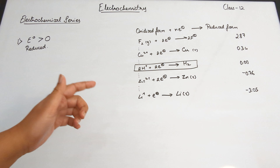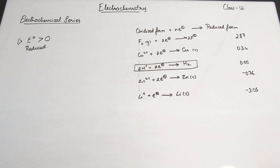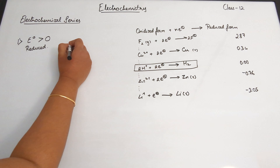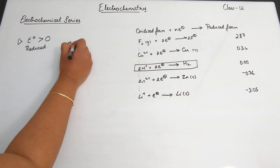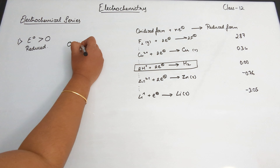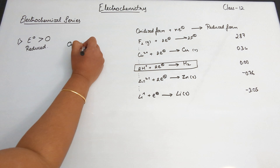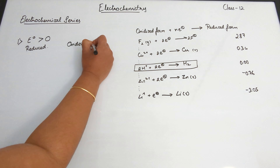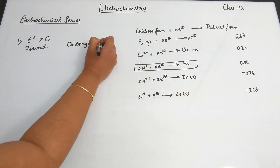In this video we talked about how we measure the standard electrode potential using the hydrogen electrode and we talked about the example of zinc and copper. In this video we are going to be talking about something called the electrochemical series.